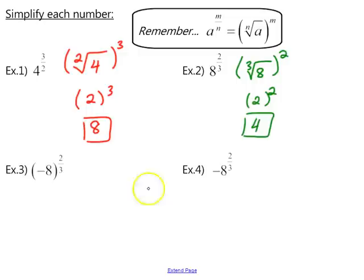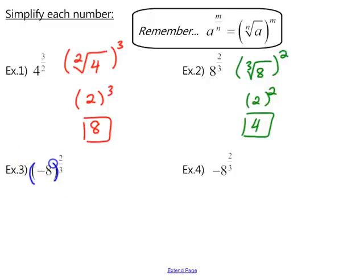Examples 3 and 4 are very similar to example 2 but differ slightly. Both have negatives, but the difference is where the parentheses lie. Example 3 has negative 8 raised to the power of 2 thirds. Example 4 has 8 raised to 2 thirds and that result is multiplied by a negative. Pay close attention to whether the negative is inside or outside the parentheses.